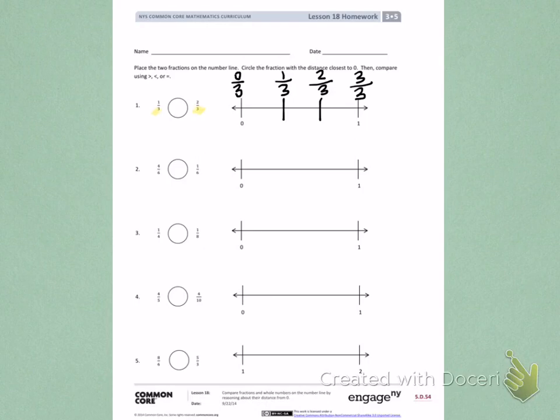Next, I'm going to circle the two fractions I'm comparing, 1 third and 2 thirds. One of those fractions is closer to 1 than the other. The fraction that I see that is closer to 1 is 2 thirds, which tells me that 2 thirds is a greater fraction than 1 third. So I would say 1 third is less than 2 thirds.